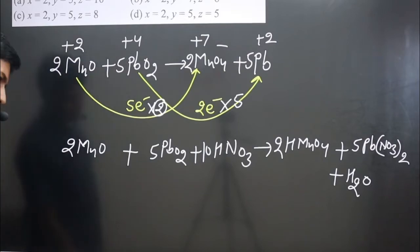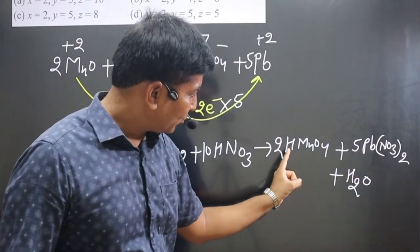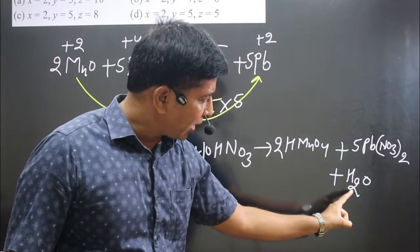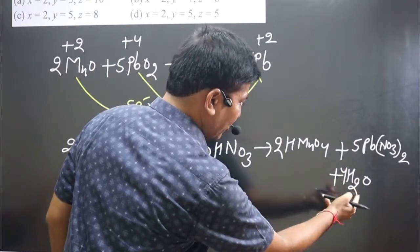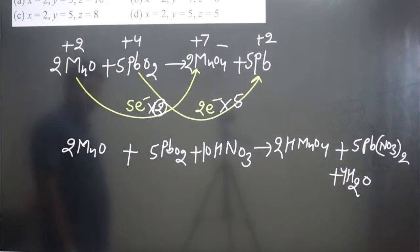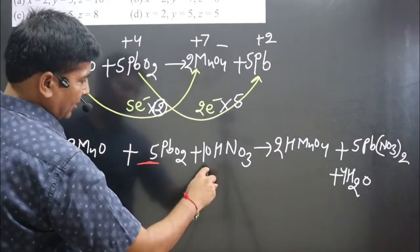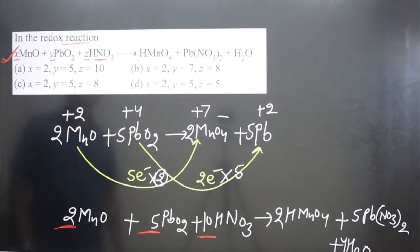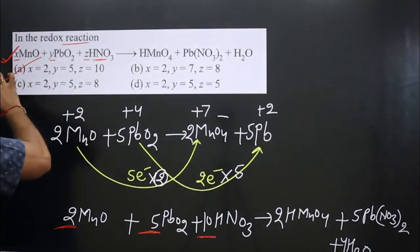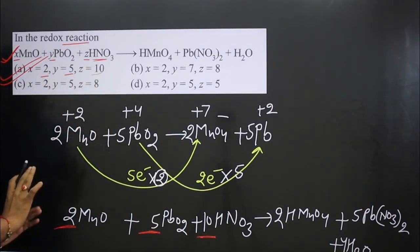For nitrate ions: five times two is ten, so we need ten nitrate ions — multiply by ten. Now balance hydrogen: ten on one side. We multiply HNO3 by four to get eight hydrogens, plus two gives ten total — the equation is balanced. Looking at the coefficients: two, five, and ten. So X=2, Y=5, Z=10. The answer matches option A: 2, 5, 10.